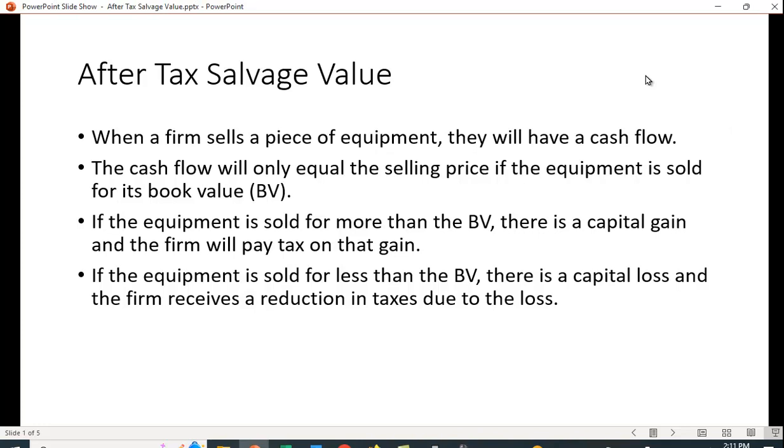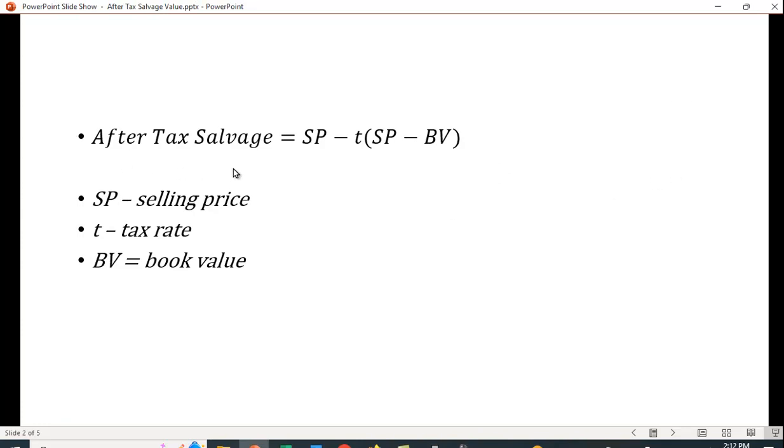The formula is that the after-tax salvage equals the selling price minus the selling price minus the book value times the tax rate. This value here, the selling price minus the book value, is going to be the capital gain or loss.